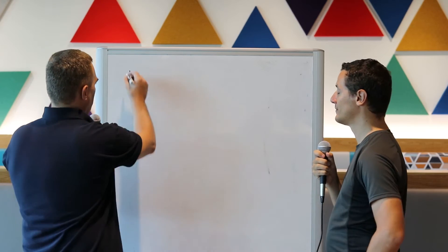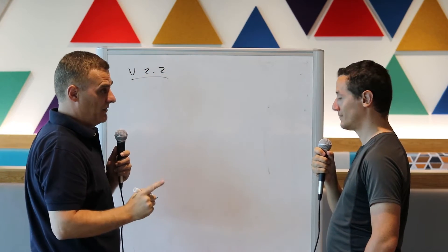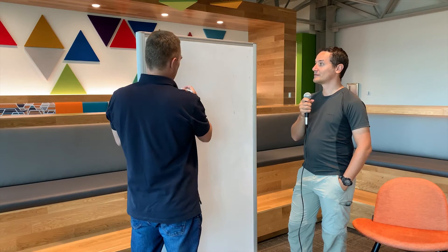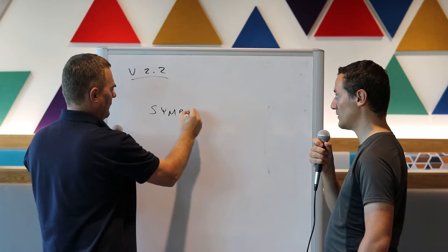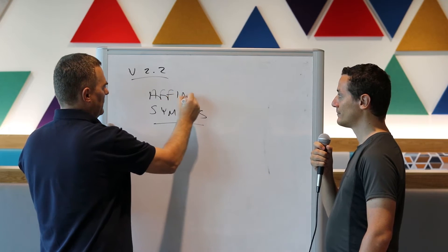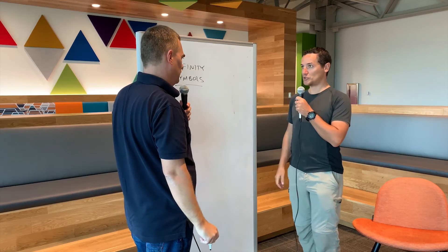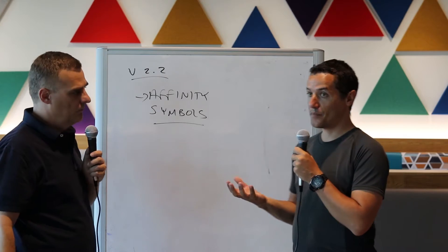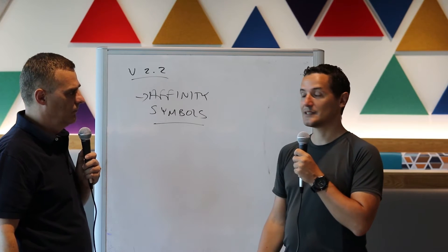So Jeremy, another feature that a lot of people like in GNS3 version 2.2 and later is these pretty symbols — affinity symbols as we call them. This is a contribution from one of our users. They're basically pretty icons, pretty symbols for your GNS3 projects.